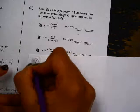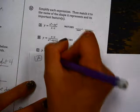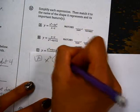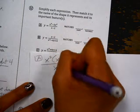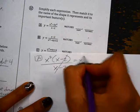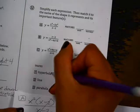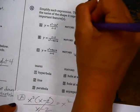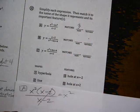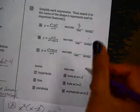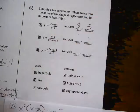So on part A, we need to factor the GCF of x squared, which leaves us with a parabola, which is shape number 3, and its features. We can see here that there would be a hole at 2 because of the denominator. So number 5, a hole at x equals 2.